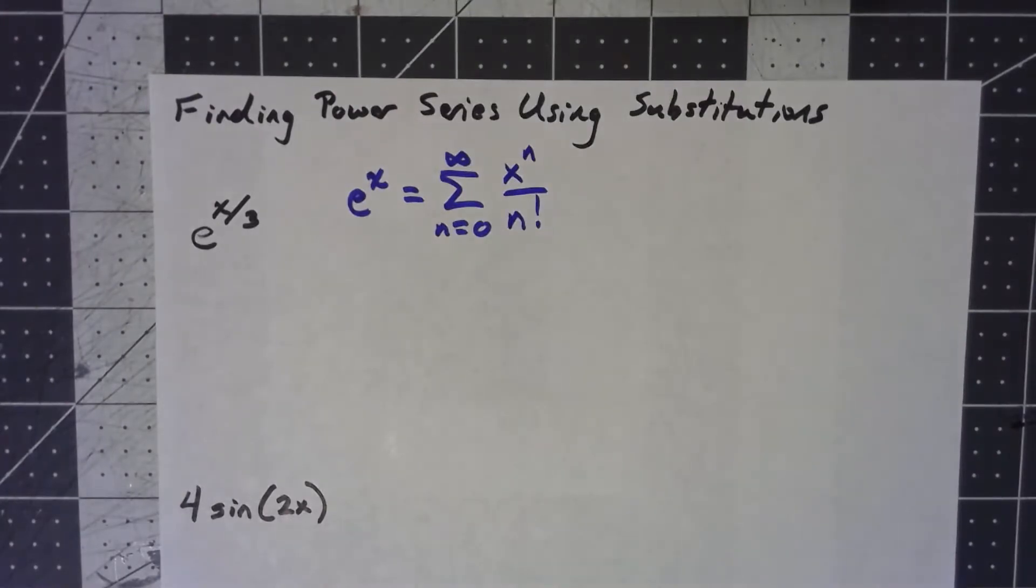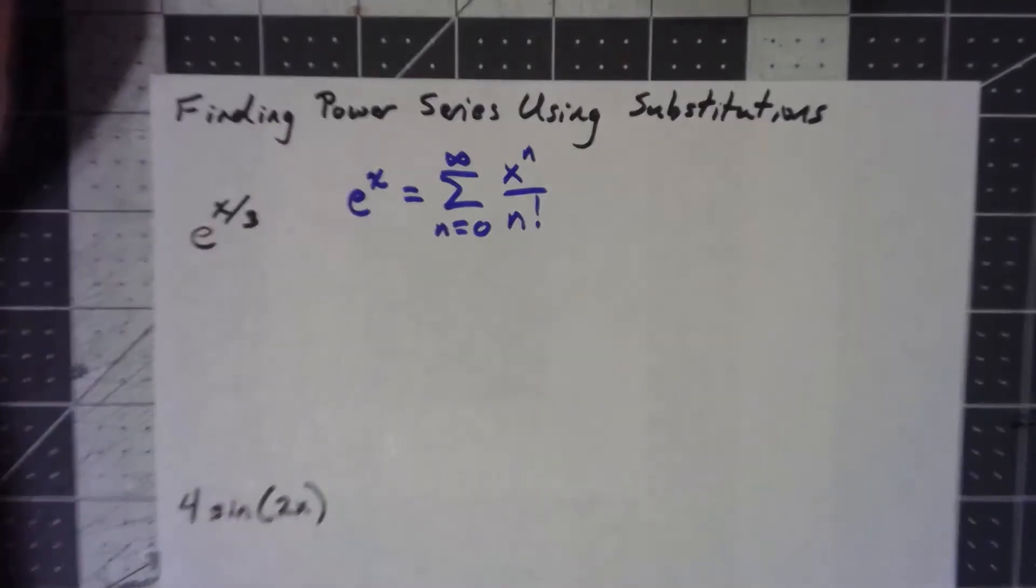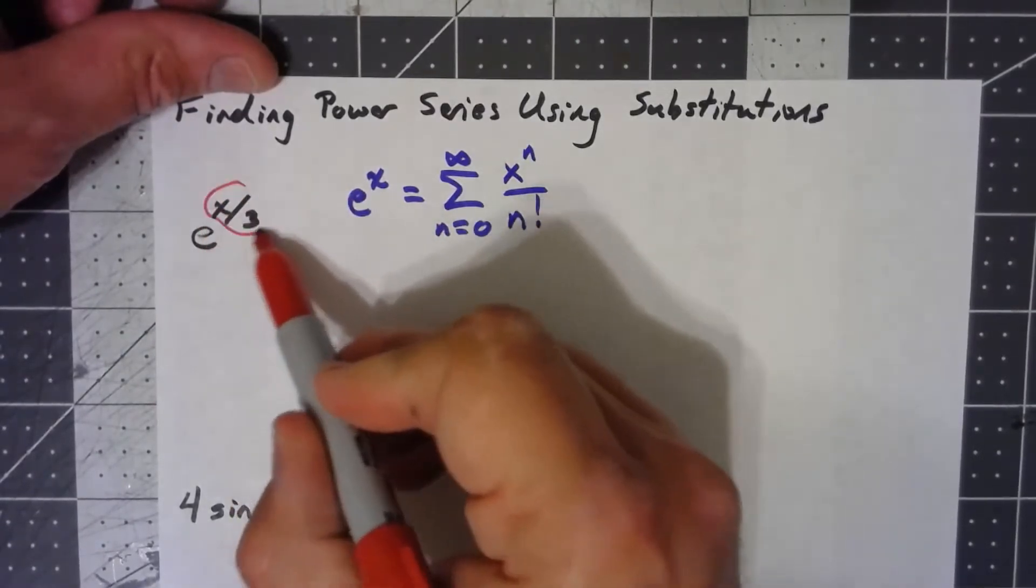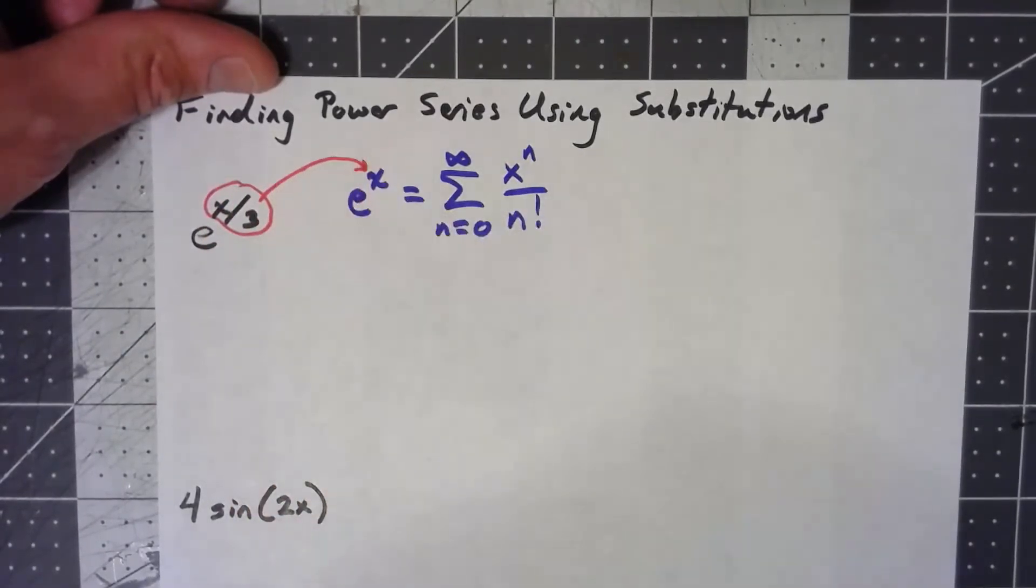So how can I get a power series for e to the x over 3? Well if you think about it, this is the same thing, it's just there's an x over 3 in place of the x.